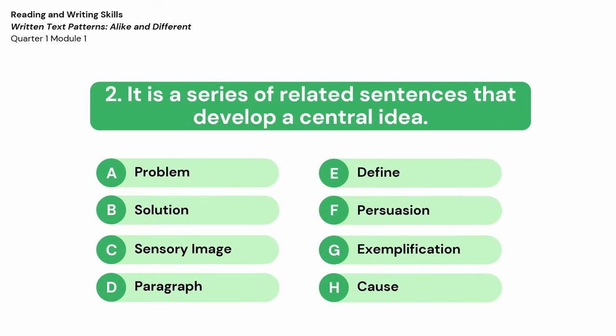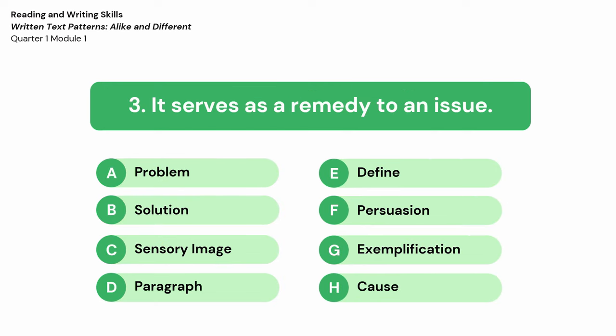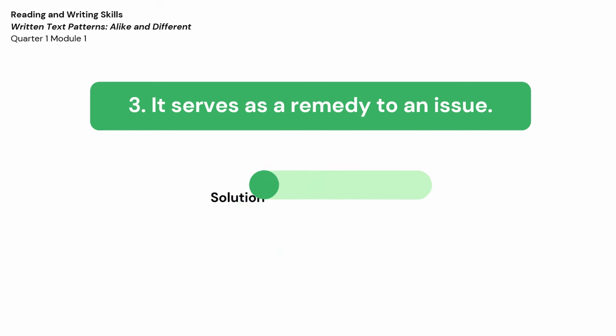Number 2: It is a series of related sentences that develop a central idea. The correct answer is letter D, Paragraph. Number 3: It serves as a remedy to an issue. The correct answer is letter B, Solution.